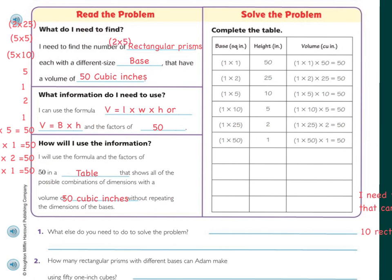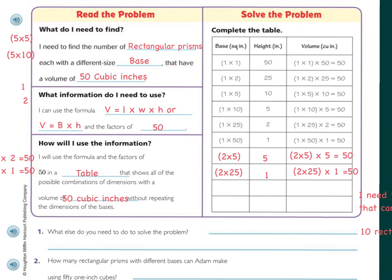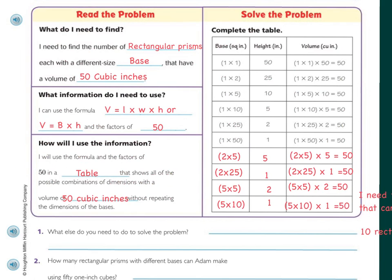Continuing down: if my base was 2 times 5, then my height would have to be 5 in order to have 50 — so 2 times 5 times 5 equals 50. If my base was 2 times 25, then my height would have to be 1, because 2 times 25 is already 50 — so 2 times 25 times 1 equals 50. If my base was 5 times 5, then my height would have to be 2, because 5 times 5 is 25, times 2 is 50. And if my base were 5 times 10, that's already 50, so my height can only be 1: 5 times 10 times 1 equals 50.